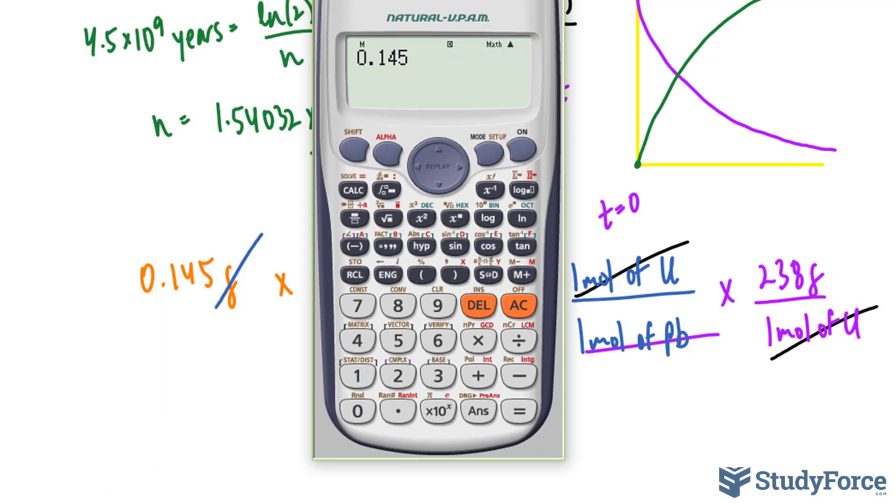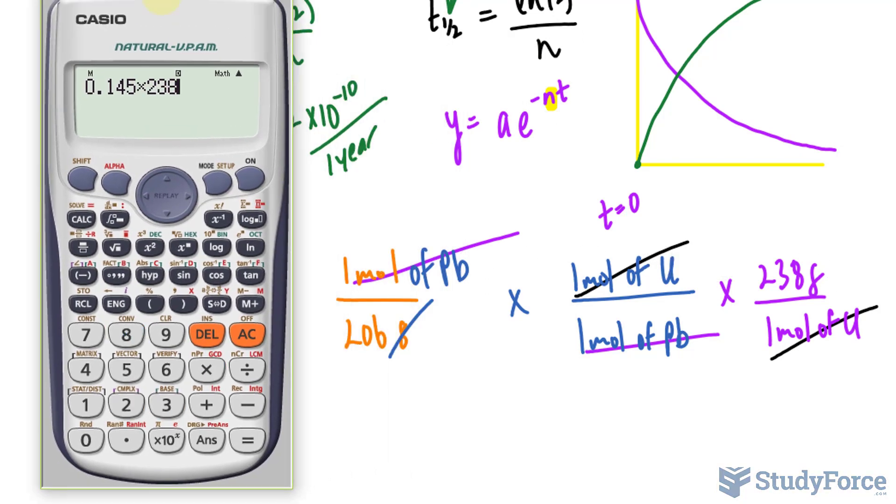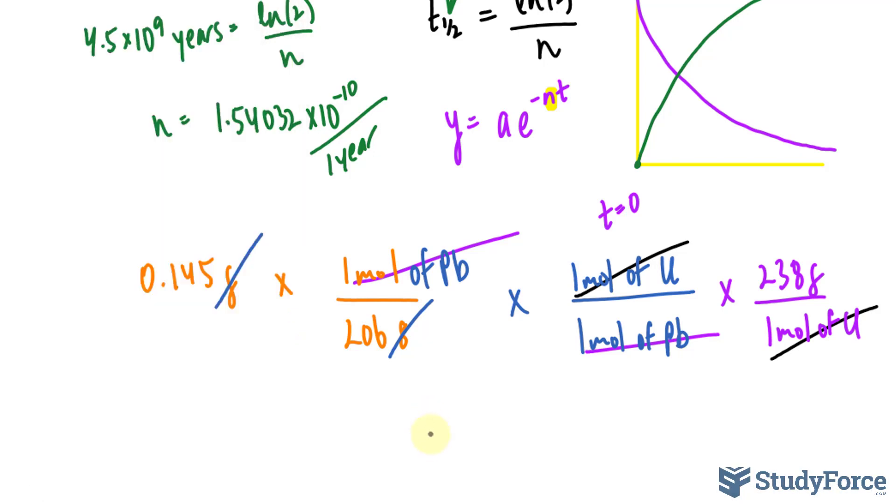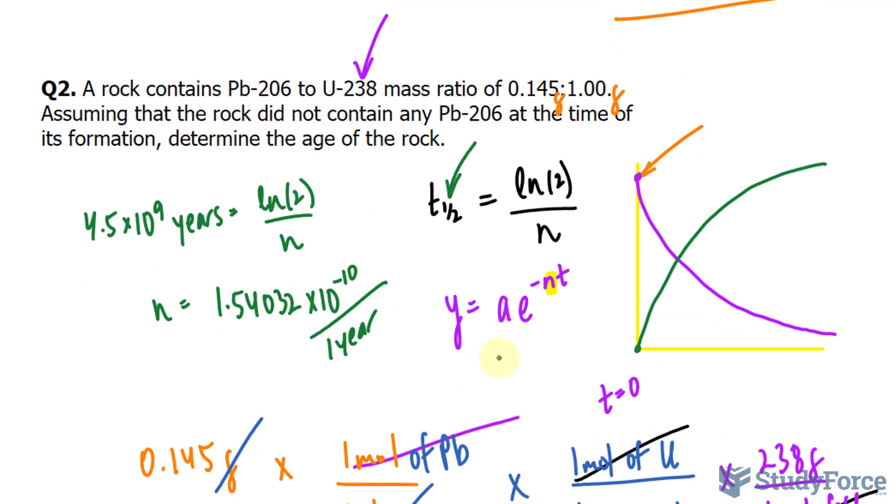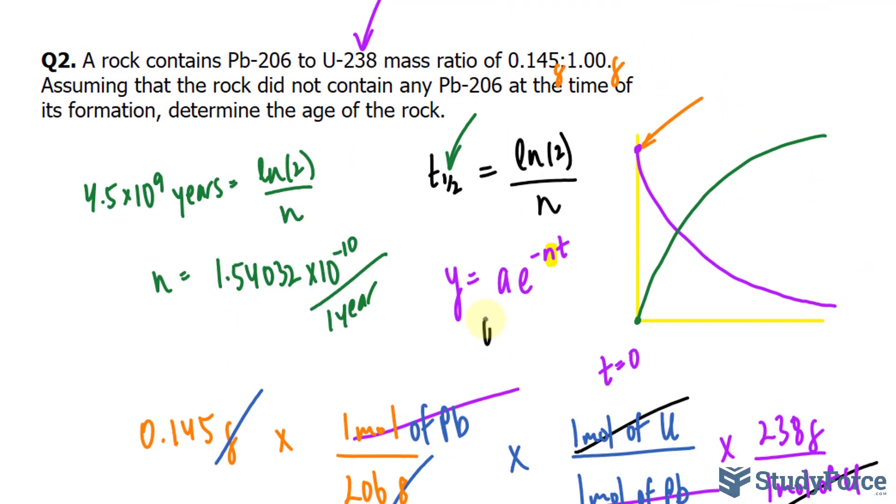So 0.145 multiplied to all the numbers at the top, 238, divided by all the numbers at the bottom. And the only number at the bottom that's worth mentioning is 206 because the rest are ones. And this number is the amount of uranium needed to form 0.145 grams of lead. 0.167, and we'll leave this to three significant figures, but I'll write a few more numbers just so that I don't run into any rounding errors. I don't want to round just yet. So that's grams of uranium needed to form 0.145 grams of lead. So going back to this formula, we now have the initial amount. It's this number, 0.167 plus the initial amount, which is one gram. What we have left is 1.00 grams of uranium.